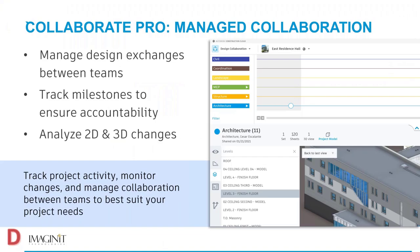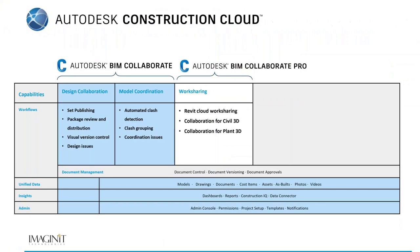So that's really what BIM Collaborate and BIM Collaborate Pro give you. Collaborate gives you everything — model coordination, design collaboration, meeting minutes, clash detection — and then Collaborate Pro adds work sharing for Revit, Civil 3D, and Plant 3D. That's really the only difference in Pro — just that work sharing capability. They all come with document management: document control, document versioning, document approvals, and so on.